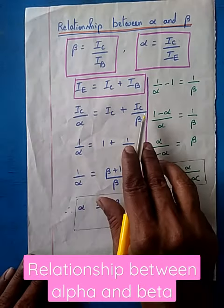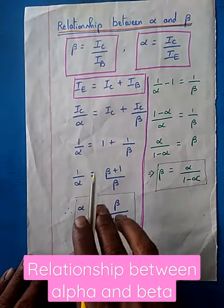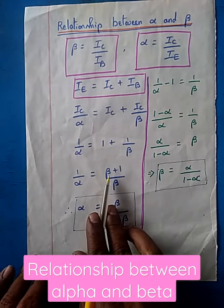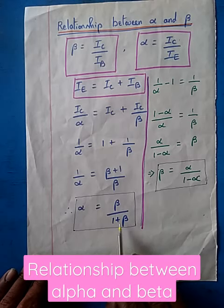Ic is common. Divide throughout by Ic, you will get 1 by alpha equals 1 plus 1 by beta. Take the LCM: 1 by alpha equals beta plus 1 by beta. Therefore, alpha equals beta divided by 1 plus beta.